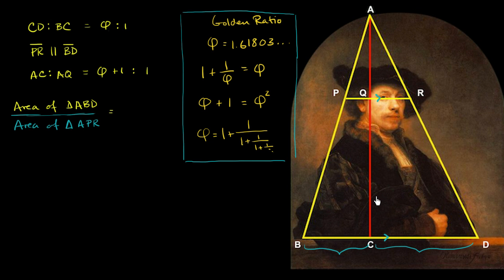Let's see if we can come up with an expression for the ratio of the area of triangle ABD — the larger triangle — to the area of triangle APR, the smaller triangle up here. We want to find this ratio in terms of phi — some expression that only involves phi or constant numbers. I encourage you to pause the video now and try to do that.